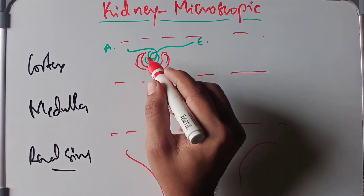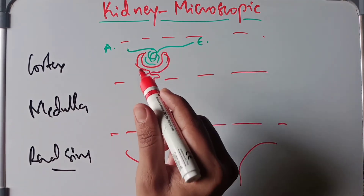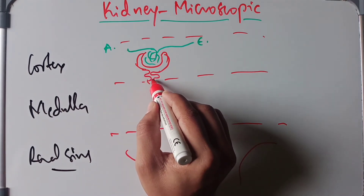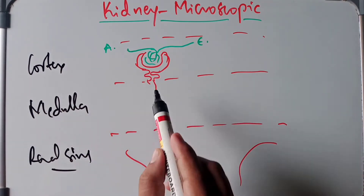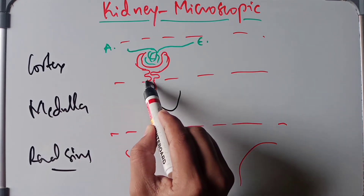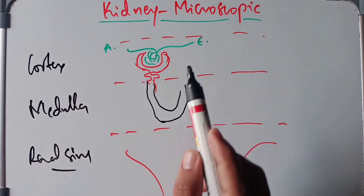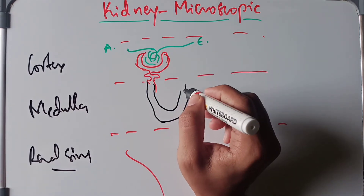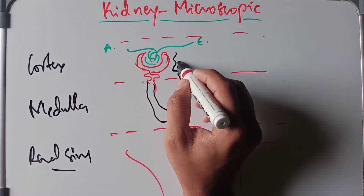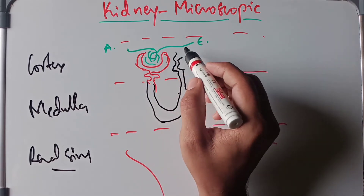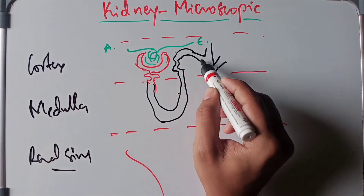This Bowman's capsule will elongate itself and then form the proximal convoluted tubule, and then further it will form the loop of Henle. We have the loop of Henle, and finally it will go upwards to form the distal convoluted tubule, and finally draining into the collecting duct.